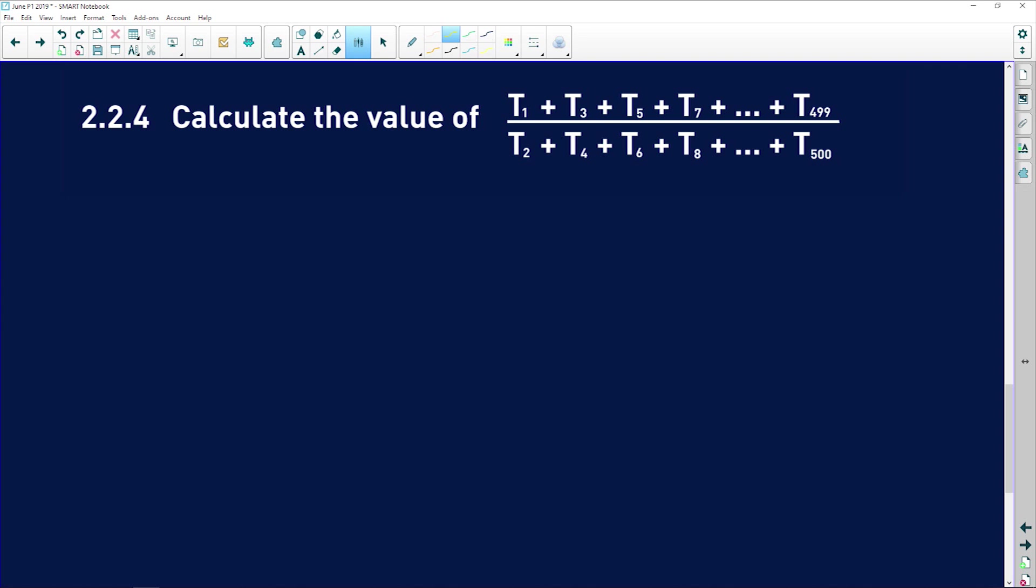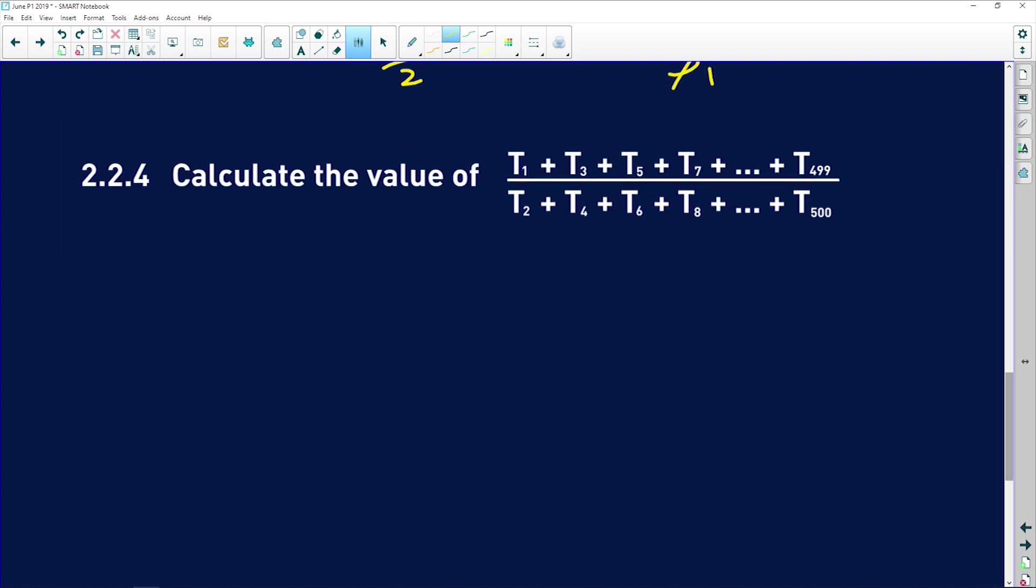And lastly, it says, this is a whopper of a question. Calculate the value of this whole expression. The first thing that you need to notice is this is term 1, term 3, term 5, which means that all of these guys here are odd numbered. And everyone in the denominator is even numbered. Here we can see that we're going up to 500. So guys, does it make sense that if I'm going 1, 2, 3, 4, 5, 6, all the way up to 500, half of them are going to be in the numerator, and half of them are going to be in the denominator. So that means that n is equal to 250.